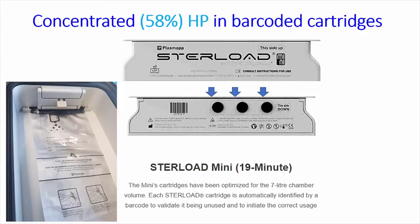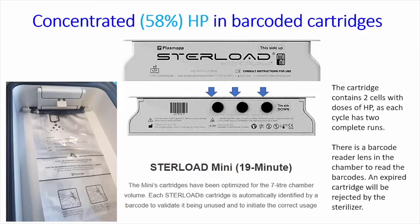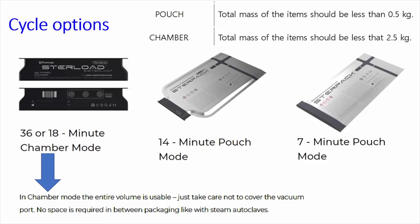The cartridges have two distinct cells so that the two sterilizing processes in each individual cycle use separate hydrogen peroxide. If an out-of-date cartridge or pouch is loaded, it will be rejected by the sterilizer and the cycle won't start. The barcodes differ between the 14-minute large pouch and the 7-minute small pouch, so the unit knows exactly what has been loaded. In full chamber mode, the entire volume is usable so you can stack things on top of each other.